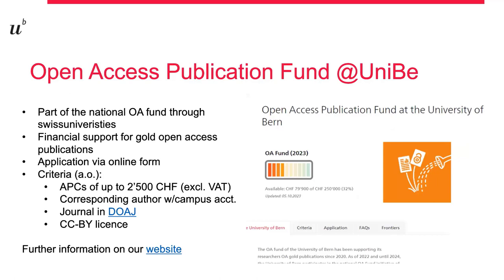If you publish in a pure gold open access journal, you can apply via the online application form on our website for funding from the Open Access Fund — as soon as you receive the invoice for the APCs. Please check, ideally before submitting an article, if the journal meets the fund's criteria: the journal should be listed in DOAJ, it must allow CC BY licenses, hybrid journals are excluded from funding, as are predatory journals, as well as publications with APCs higher than 2,500 CHF. Please note that, as with some Read and Publish agreements, annual funding is limited.